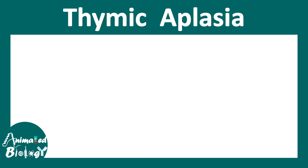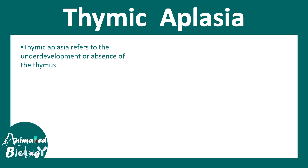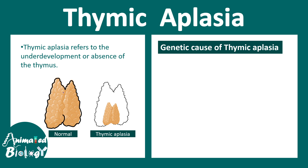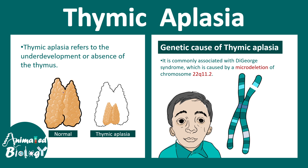In thymic aplasia, thymus development is abrogated — there is underdevelopment or complete absence of the thymus. In most cases there is underdevelopment of the thymus. This is associated with a syndrome known as DiGeorge syndrome, and it is commonly associated with micro-deletions on the 22nd chromosome, specifically 22q11.2.